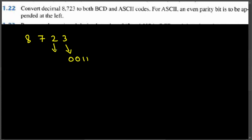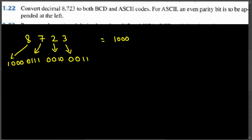For digit 2, the four-bit binary is 0010. For digit 7, it is 0111. And for digit 8, it is 1000.